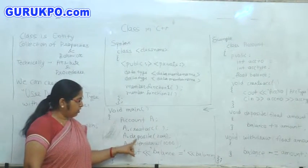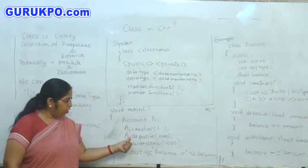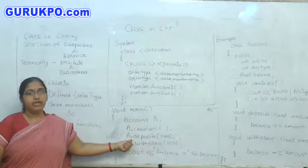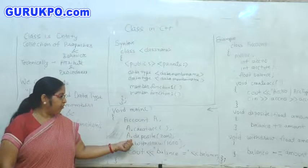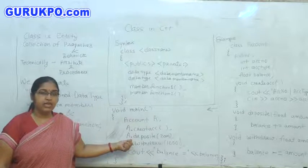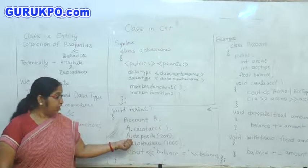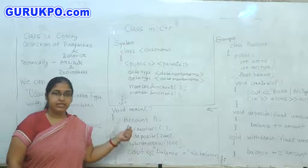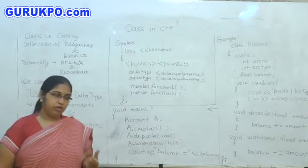After that, we call A dot deposit. What is this dot? This dot is known as dot operator or member of operator. Whenever we want to access any of the member of any object, we have to use this member of operator.